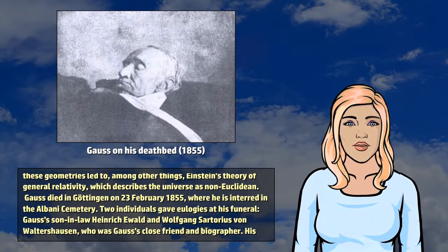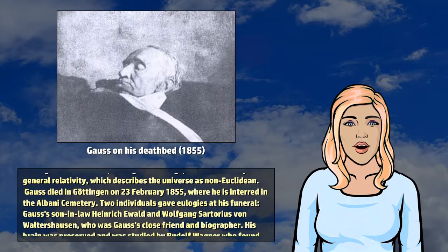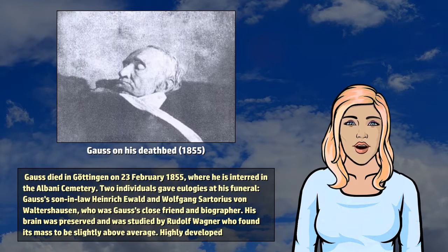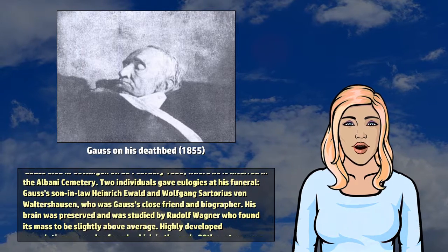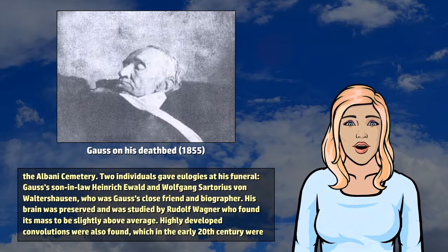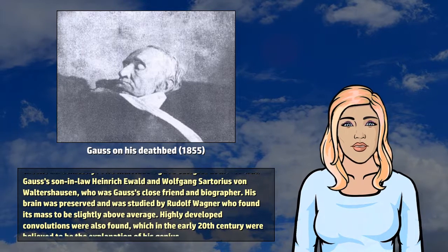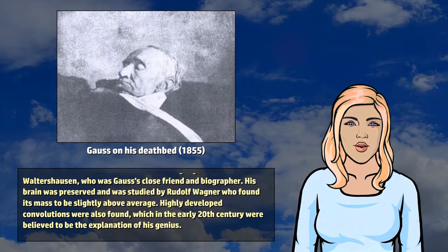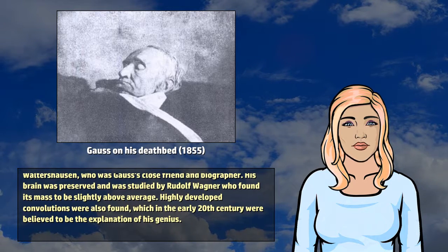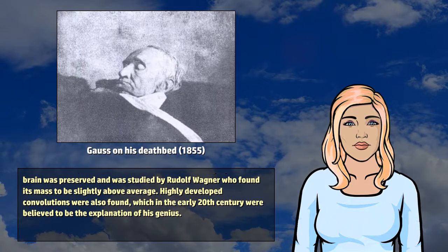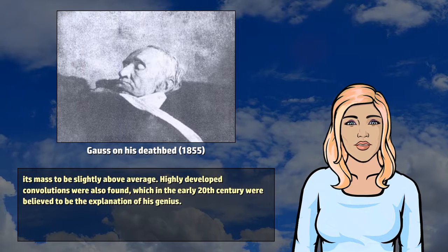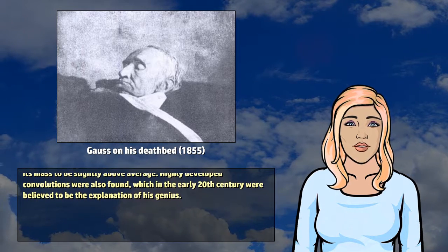Gauss died in Göttingen on February 23, 1855, where he is interred in the Albani Cemetery. Two individuals gave eulogies at his funeral, Gauss's son-in-law Heinrich Ewald and Wolfgang Sartorius von Waltershausen, who was Gauss's close friend and biographer. His brain was preserved and was studied by Rudolf Wagner who found its mass to be slightly above average. Highly developed convolutions were also found, which in the early 20th century were believed to be the explanation of his genius.